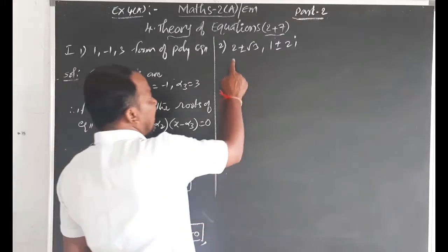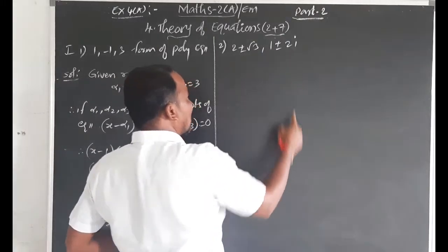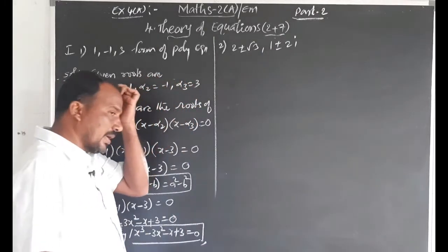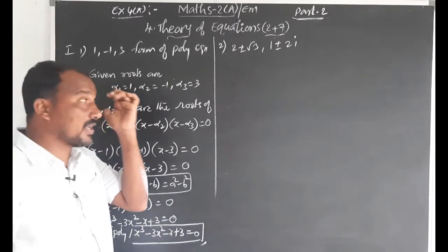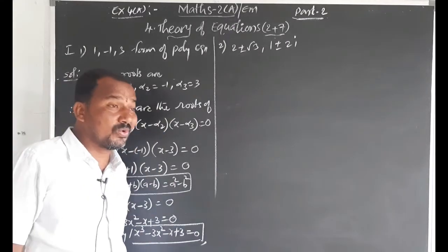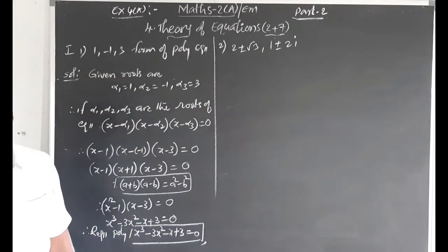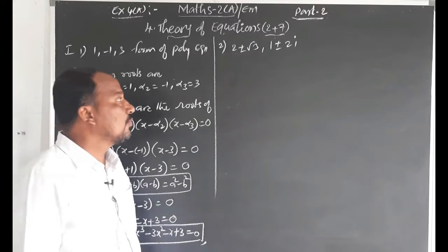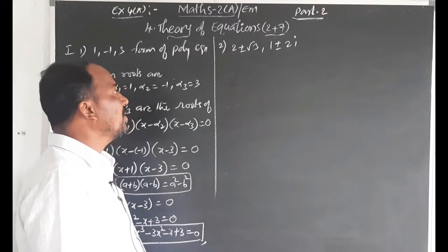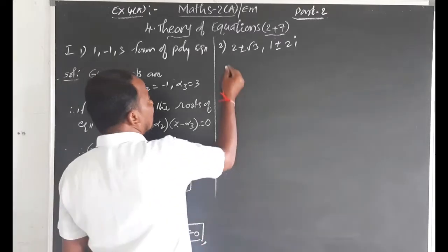Second problem: roots are 2 ± √3 and 1 ± 2i. Here four roots are given, so this will be a 4th degree polynomial.